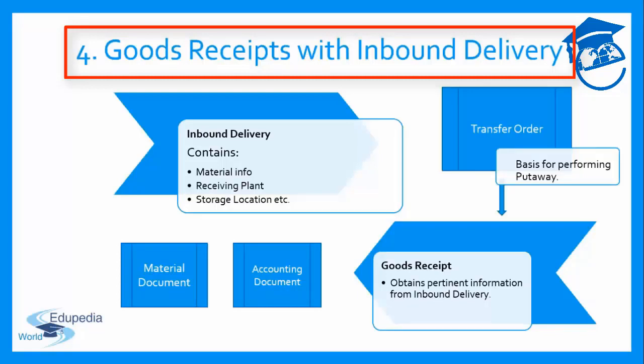As a high-level summary of these two phases: with storage type determination, the system determines exactly where goods being received have to be stored — the interim storage area, the goods receipt zone, and the issuing storage bin, which serves as a staging area before putaway. With putaway and goods receipt posting, putaway refers to removing goods from the interim storage goods receipt zone and placing them into their respective storage bins. This putaway process requires transfer orders created with reference to the inbound delivery.